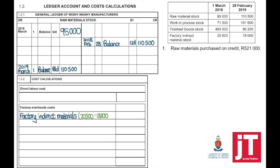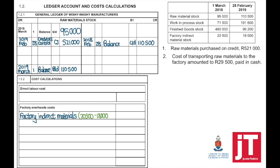Transaction 1: raw materials purchased on credit, 521,000. This is a stock account, so buying raw materials increases stock. The details are creditors control in the creditors journal, 521,000. Transaction 2: cost of transporting raw materials to the factory, 29,500 paid in cash — this must be added to the raw materials stock account, bank CPJ, 29,500. Transaction 3: indirect materials bought for cash, 77,500. Indirect materials form part of your factory overhead cost and must be added to the factory indirect materials stock.